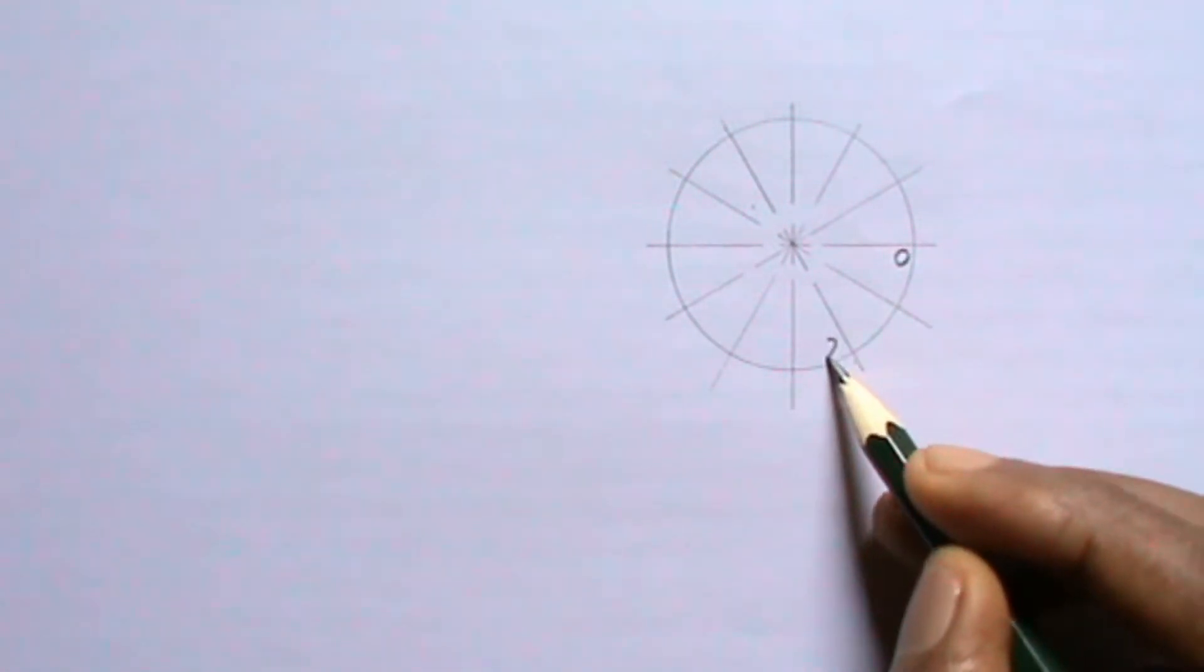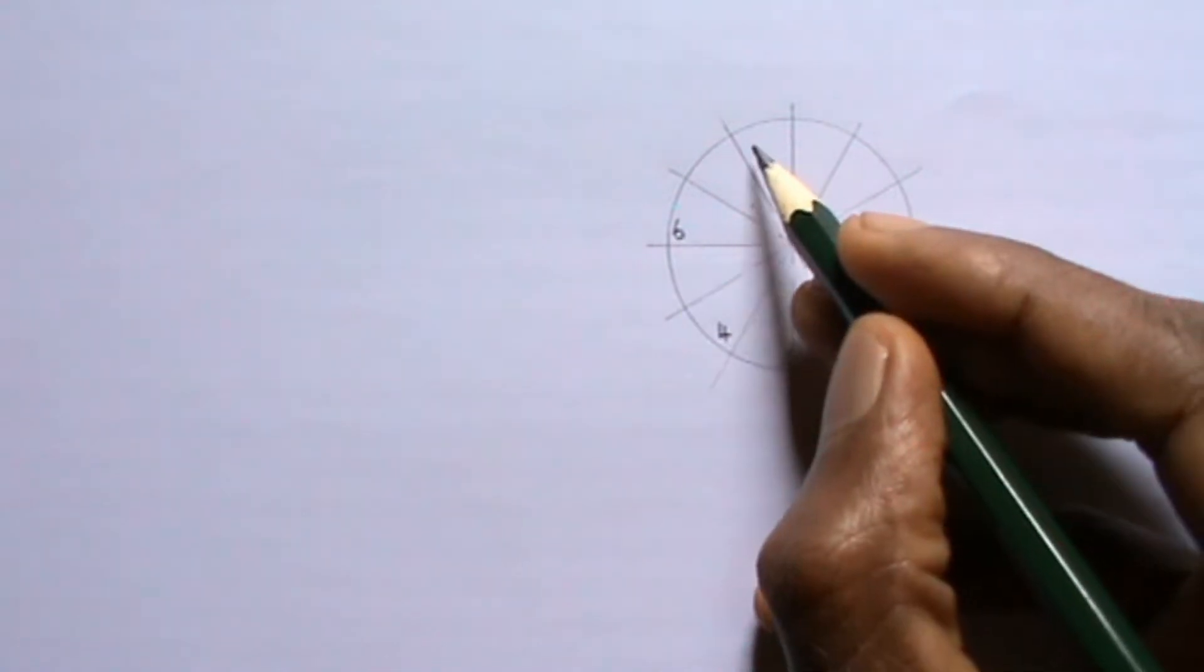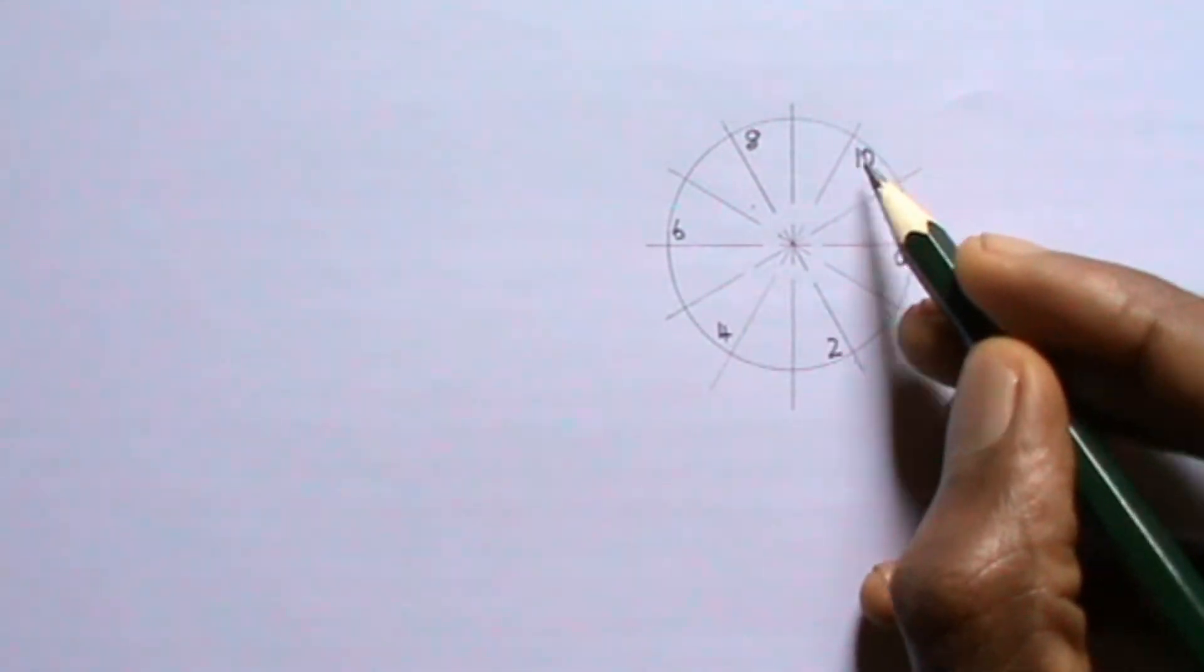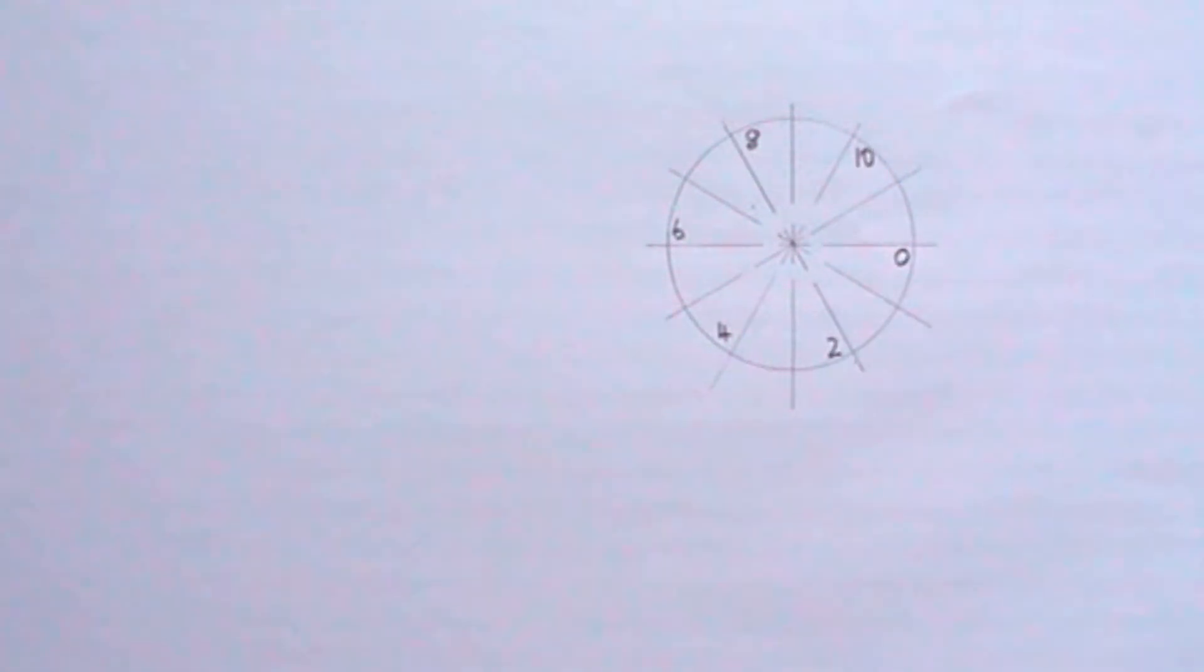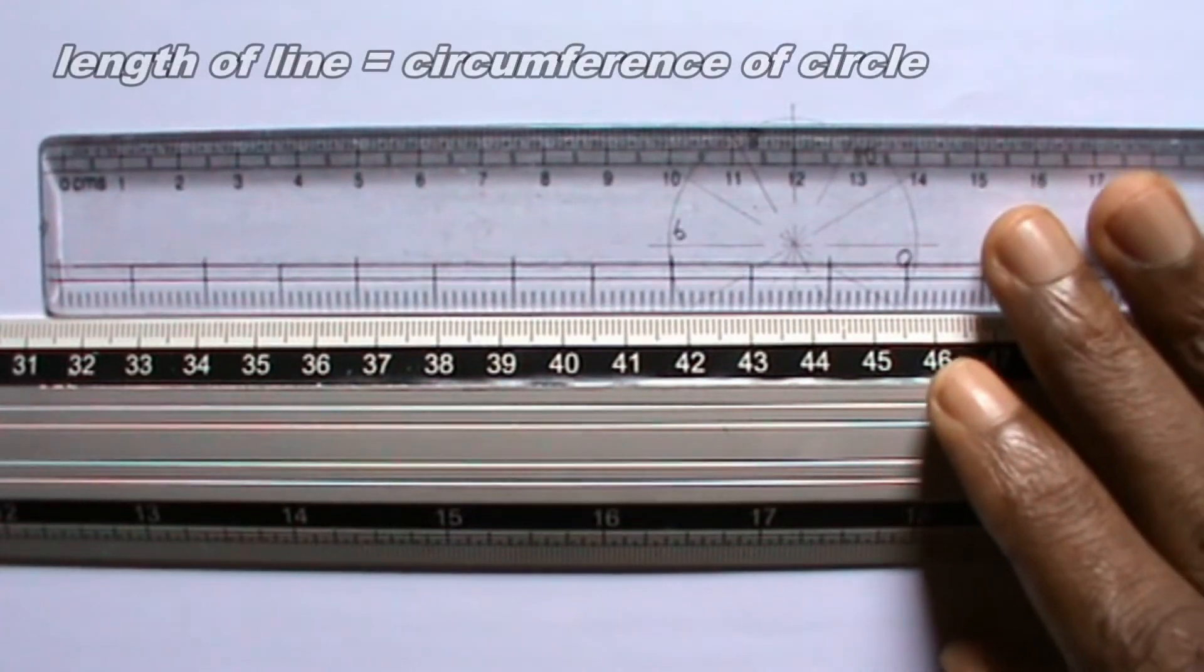I will number the points where the lines intersect the circumference of the circle. Next, I will draw horizontal lines touching the top of the circle. The horizontal line should be equal in length as the circumference of the circle.